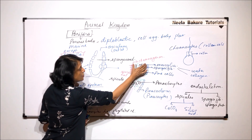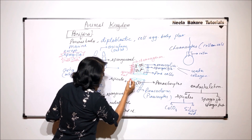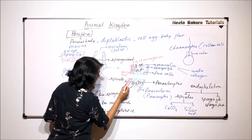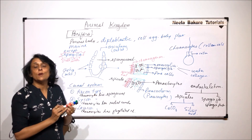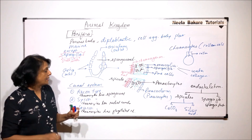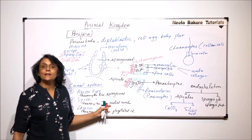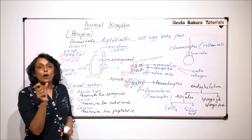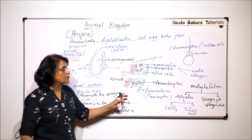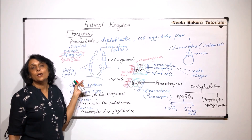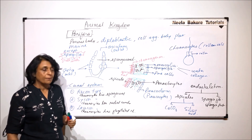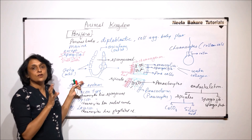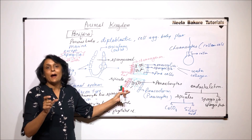To summarize the structure of the body wall: it has an outer layer of pinacocytes forming the pinacoderm, and an inner layer of choanocytes forming the choanoderm. Depending on the type of canal system, choanocytes can be lining the spongocoel, the radial canals, or the flagellated chambers.